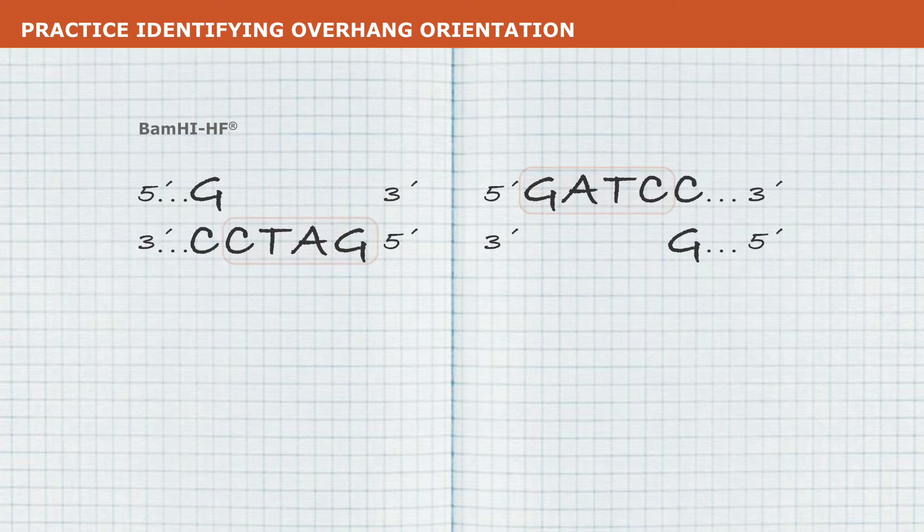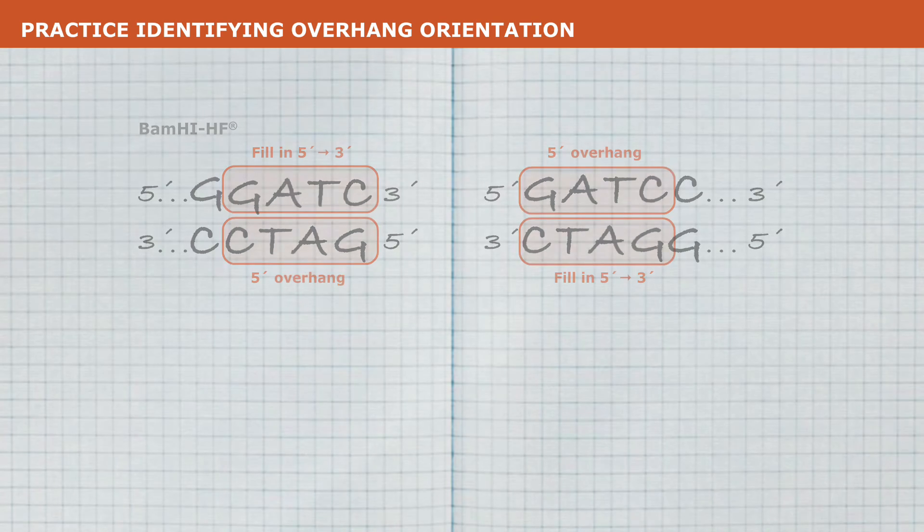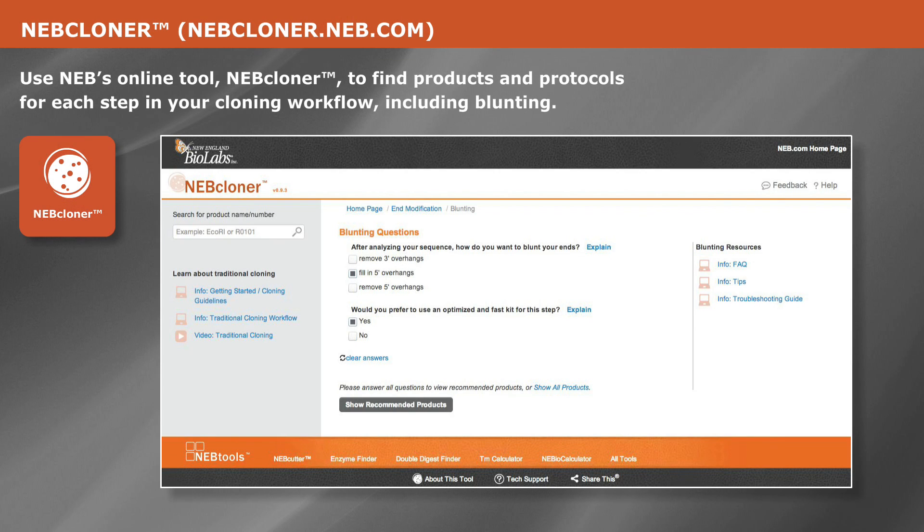With practice, identifying overhang orientation will get easier, and you won't need to write out the digested sequence every time, although it is a good habit to develop. Use NEB's online tool, NEB Cloner, to find products and protocols for each step in your cloning workflow, including blunting.